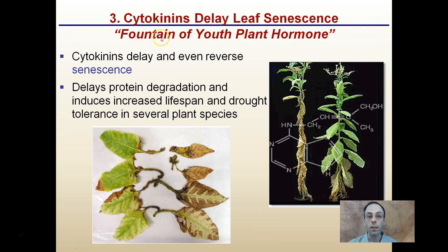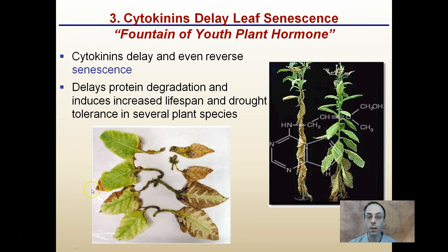Cytokinins delay leaf senescence — it's called the fountain of youth hormone. By delaying or even reversing this process, plant leaves can maintain their chlorophyll longer, delay protein degradation, and increase the lifespan and drought tolerance of several plant species.